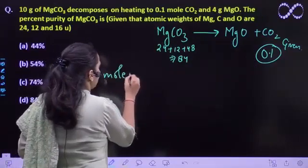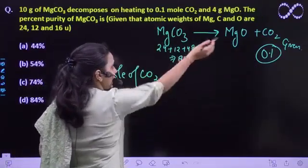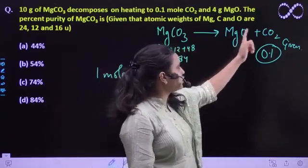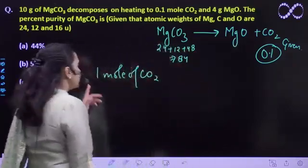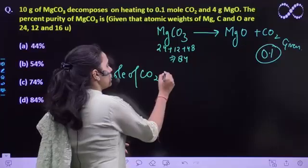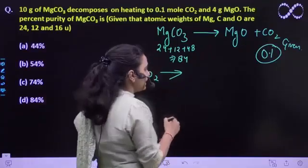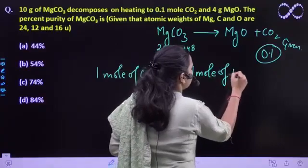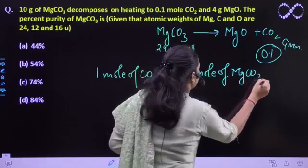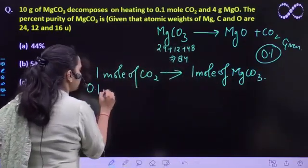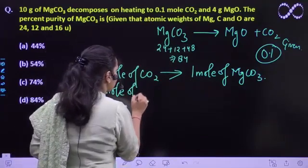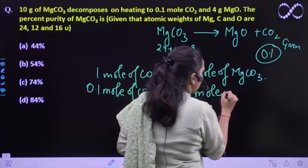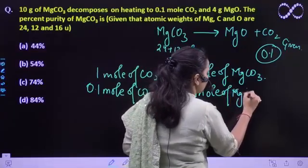So 1 mol of CO2, from the reaction we see, 1 mol MgCO3 decomposes to 1 mol MgO and 1 mol CO2. So 1 mol of CO2 is created by 1 mol of MgCO3. So if 0.1 mol is forming, then it is forming from how much? 0.1 mol of MgCO3.